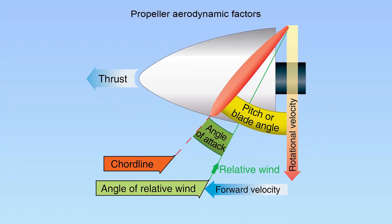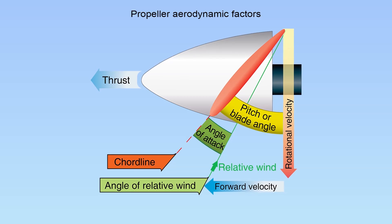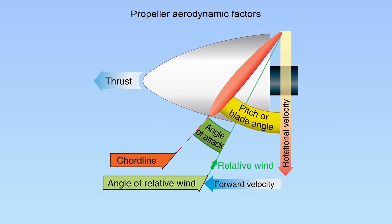Although blade angle and propeller pitch are closely related, blade angle is the angle between the face or cord of a blade section and the plane in which the propeller rotates.